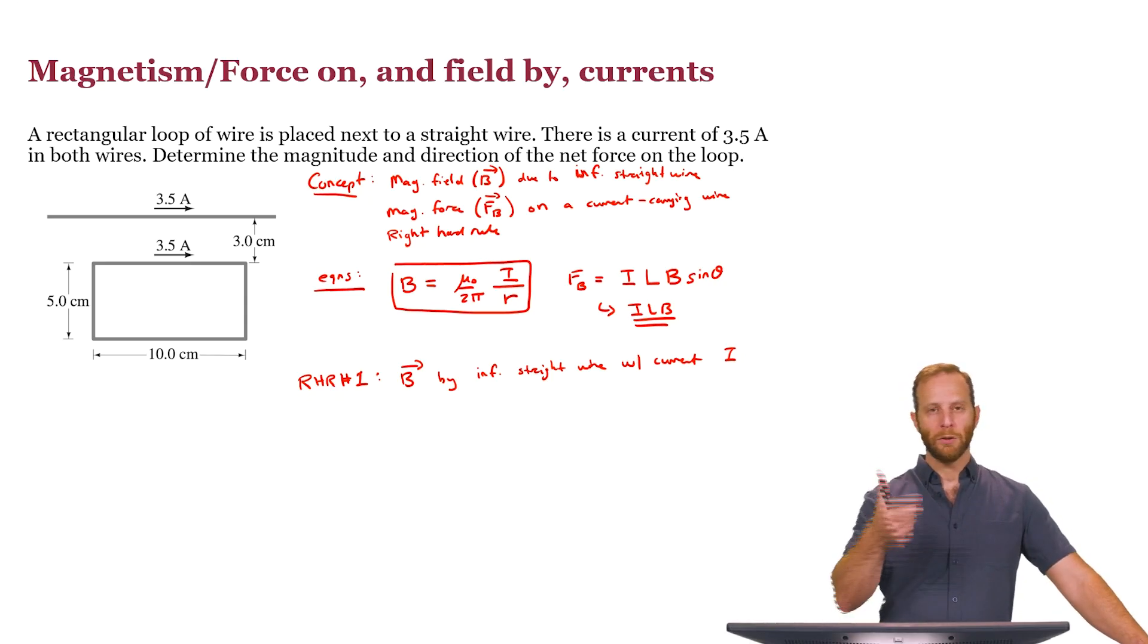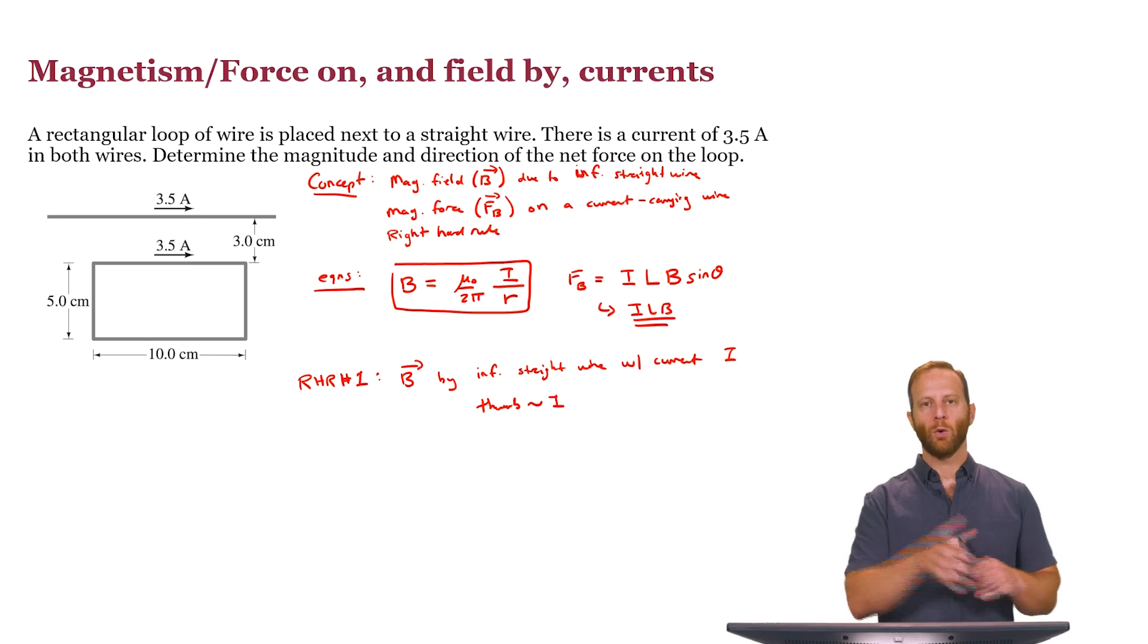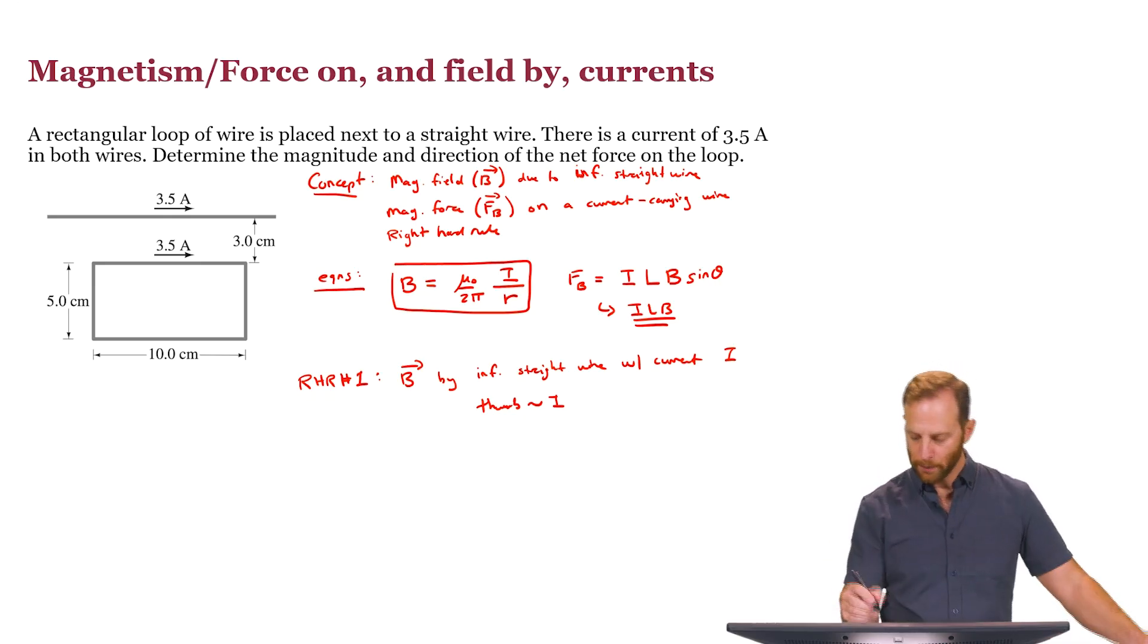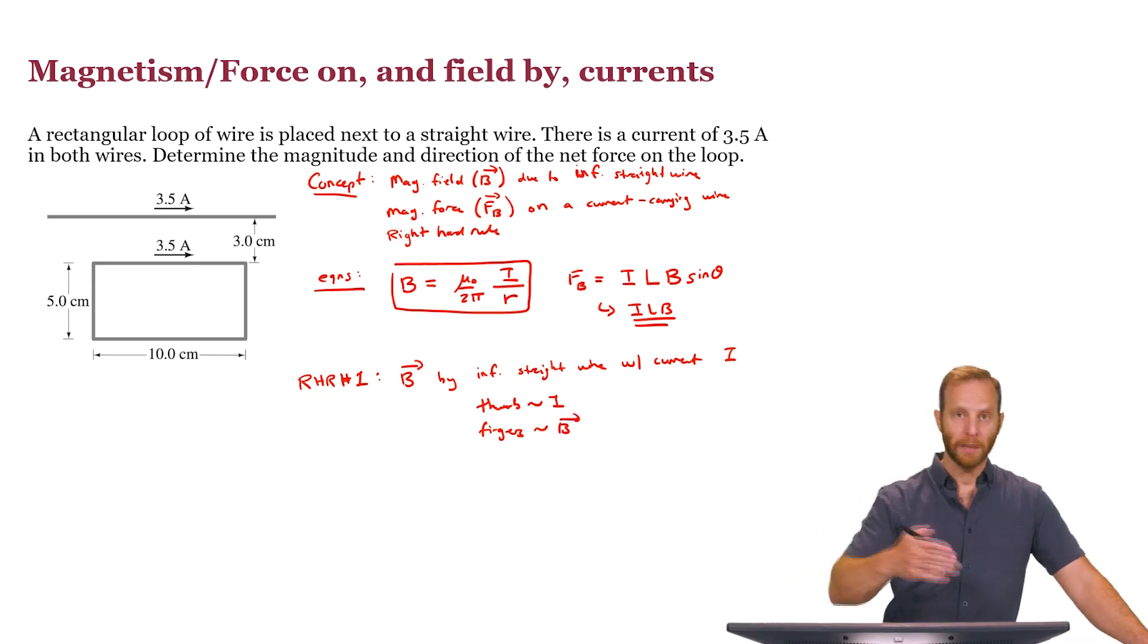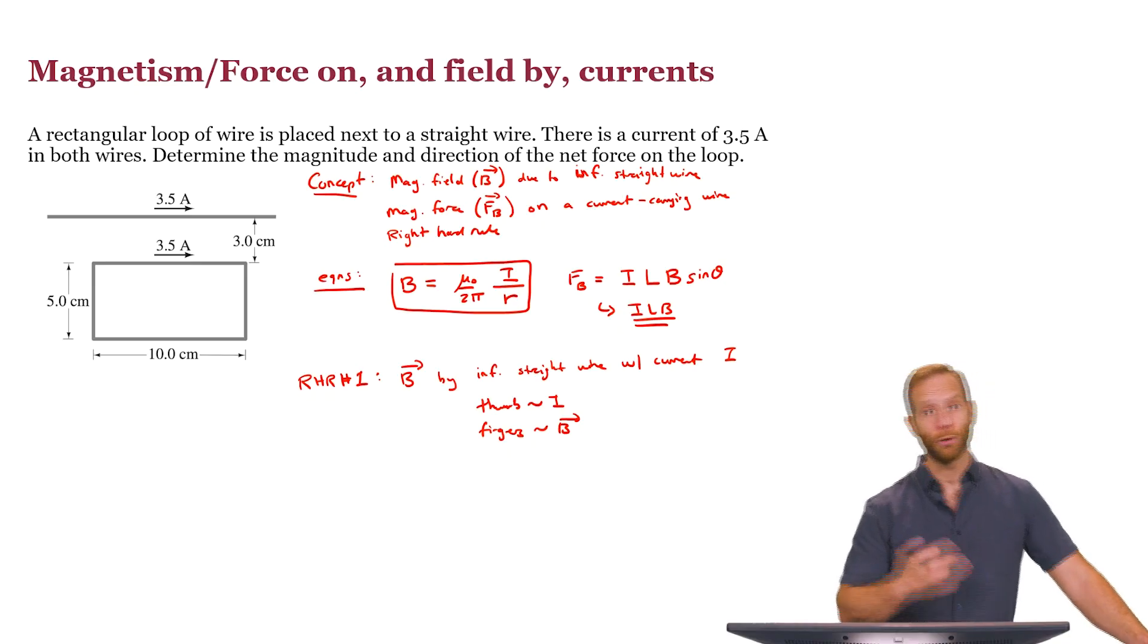The way that this works is that your thumb, your right thumb, points in the direction of the current, and then your wrapping fingers tell you the direction of the magnetic field at any point around that wire. So the fingers tell you the direction of B. That's for predicting the direction of the magnetic field produced by a current.